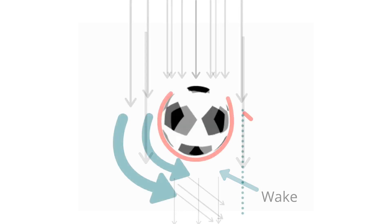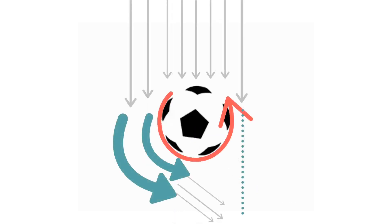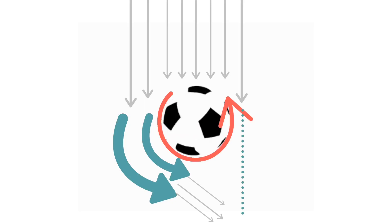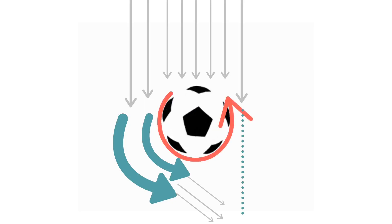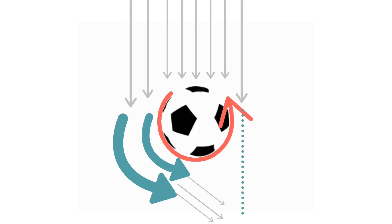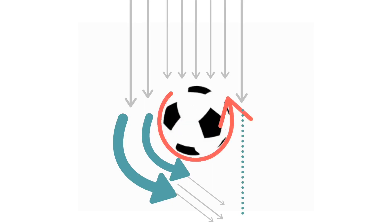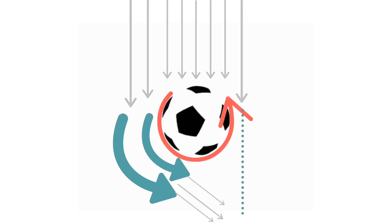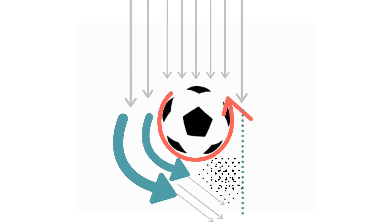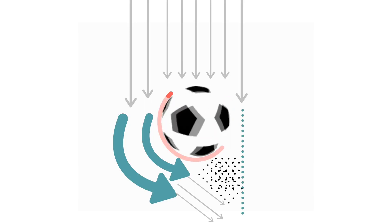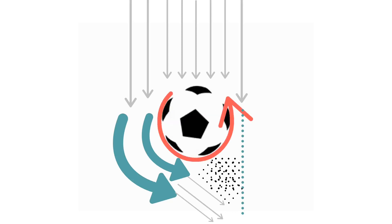Furthermore, as the ball spins counterclockwise, the streams of air will also follow the direction of the ball. The streams of air that follow the spin of the ball will deflect to the right, while the streams of air to the right of the ball will slow down and continue straight. The ball must travel left, according to Newton's third law, which states that for every action there is an equal and opposite reaction.